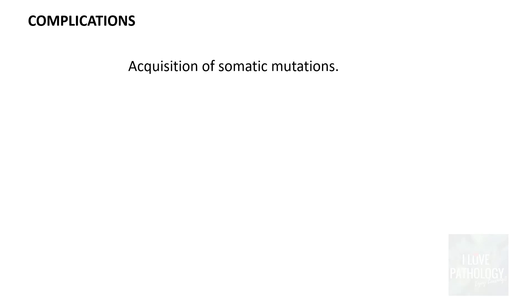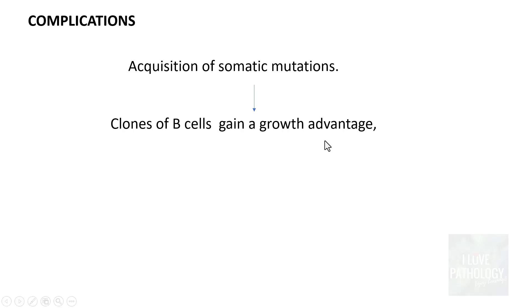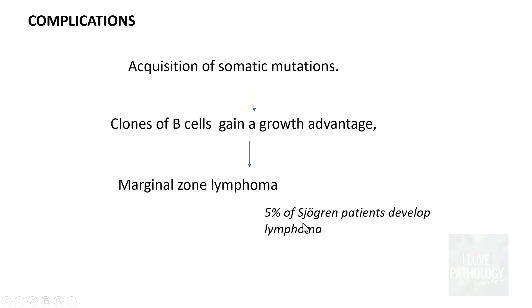Complications of Sjogren's syndrome include acquisition of somatic mutations, leading to clones of B cells with a growth advantage and development of a lymphoproliferative disorder — particularly marginal zone lymphoma, which occurs in approximately 5% of Sjogren's syndrome patients. This occurs because the extensive infiltration of lymphoid cells allows some of them to acquire somatic mutations, resulting in marginal zone lymphoma.